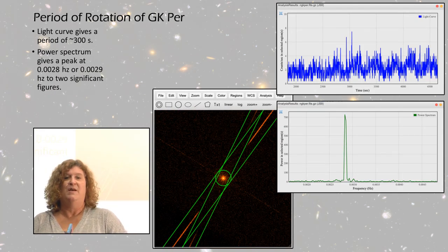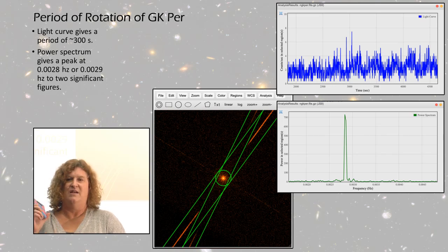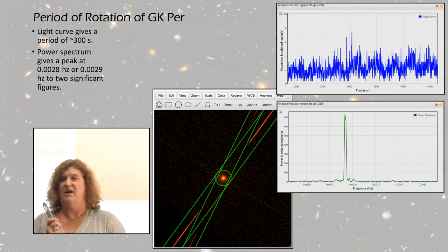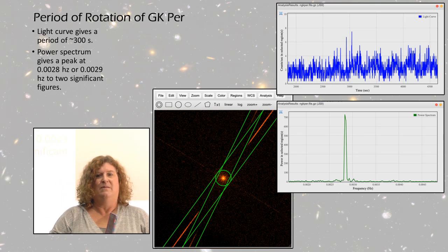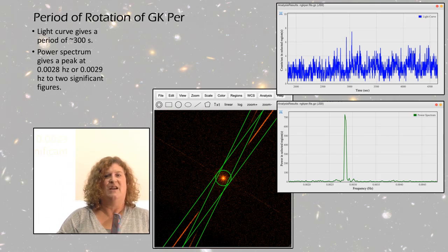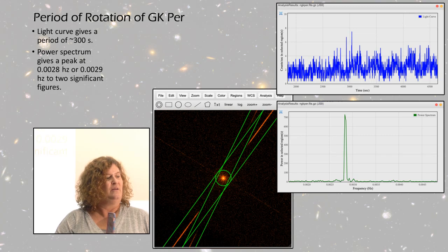Looking at GK Per, this is a perfect example. GK Per really looks a lot like CENX3 did in the slide before, but they definitely have different spin rates.